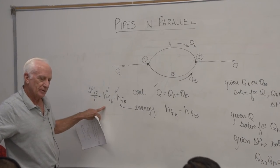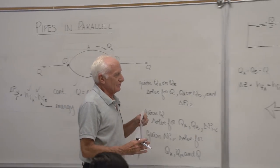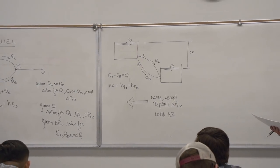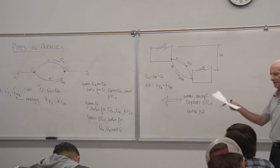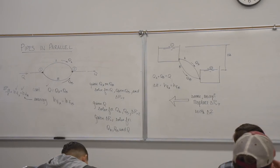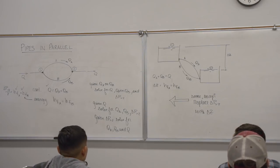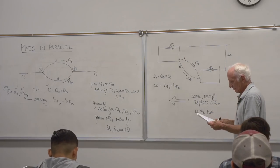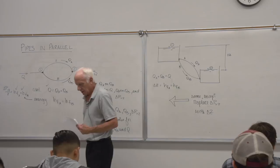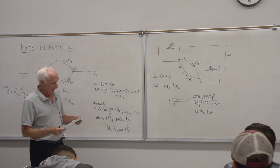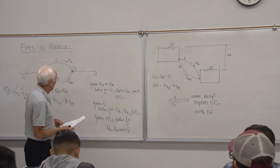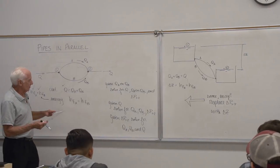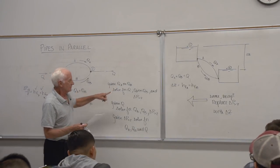For the reservoir problem it's the same, just replace delta P one-to-two with delta Z. For instance, given the total flow rate Q, solve for QA, QB, and delta Z. I'm going to solve a delta P problem where I know QA. So here's the problem I've got: QA is given.